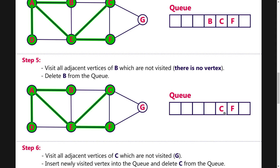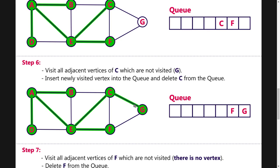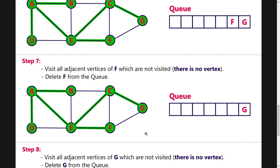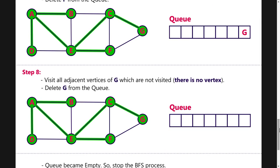Next, we visit C. We look at C's adjacent non-visited nodes: B, E, F, G. B, E, and F are already visited. G is not visited, so we insert G into the queue and delete C. Next, F has no unvisited adjacent node, so we delete F. Then G also has no unvisited adjacent node, so we delete G. Now the queue is empty, so we stop the process.